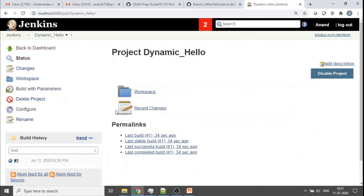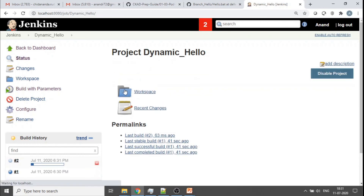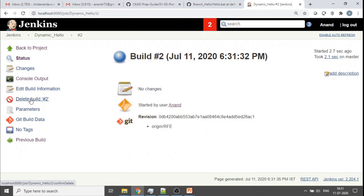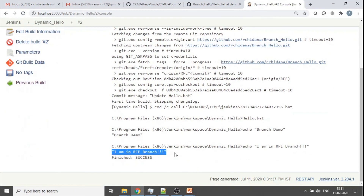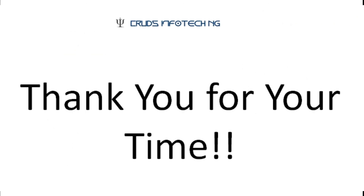Let me try once more to validate. This time I choose the RFE branch and build. The output now says 'I am in RFE branch' — confirming everything works correctly. As mentioned, this is a very quick demo for parameterizing Jenkins jobs. It's a very useful and easily implemented feature. Thanks for watching — I hope you found this informative. If you have questions or something doesn't work for you, feel free to leave a comment and I'll get back to you as soon as I can.